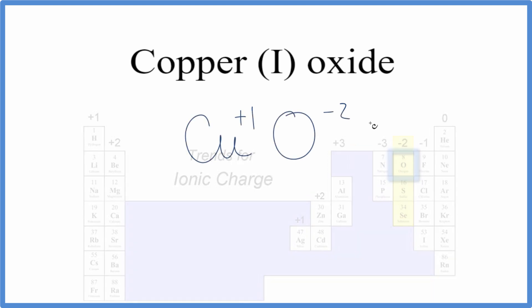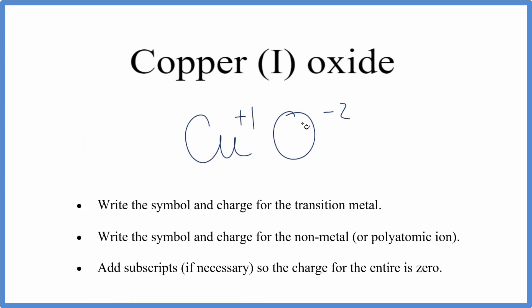So these charges need to balance out. We need to have a net charge of 0. If we had two copper atoms, that would mean 2 times plus 1. That would give us a plus 2. That would balance out the minus 2.